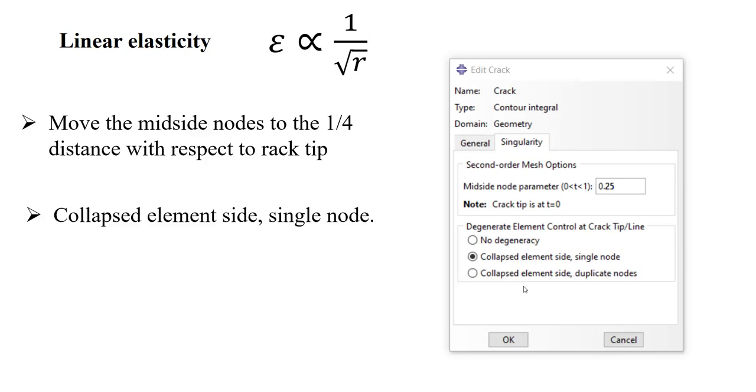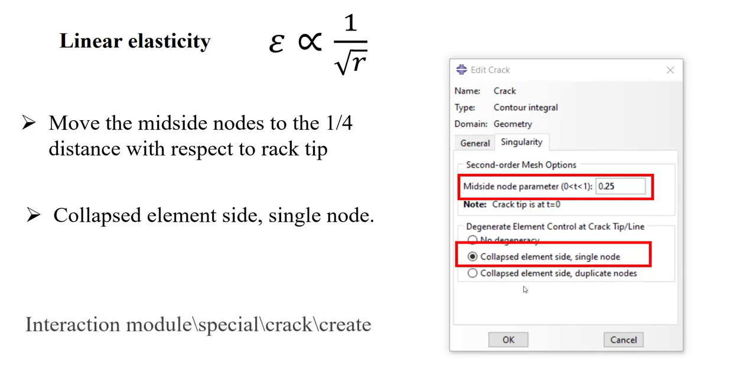In Abaqus environment, we can apply these changes as follows. At first, we change the position of the mid-side node to be at 0.25 with respect to crack tip, and then we choose single node for collapsed side. We can access these windows from interaction module, special, crack, and create.